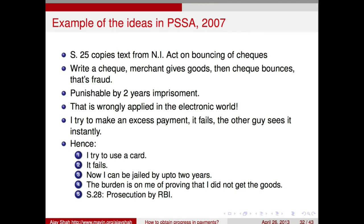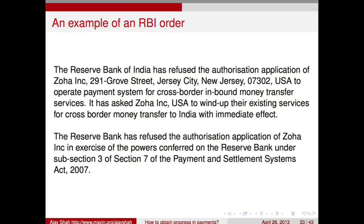Here is an example of an RBI order drafted under this act. It says the Reserve Bank of India has refused the authorization application of some company to operate a payment system. The second paragraph says RBI refused in exercise of powers conferred under the PSS Act. There is absolutely no reasoning, no facts, no evidence — this is not a reasoned order. RBI gives no reasons, has absolute God-like power, issues a one-line letter saying you cannot do this business, and what is more, this cannot be appealed. This is not the rule of law; this is a dictatorship.